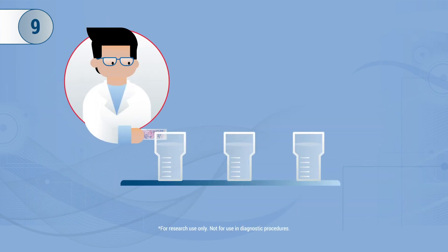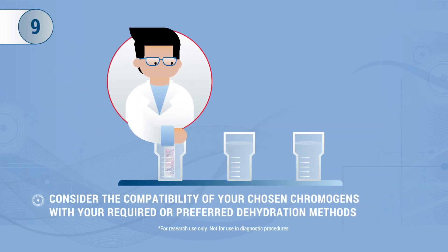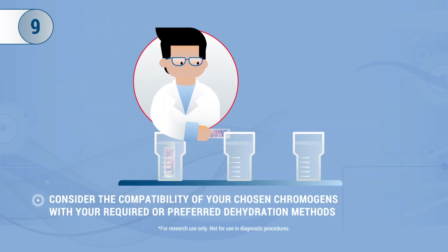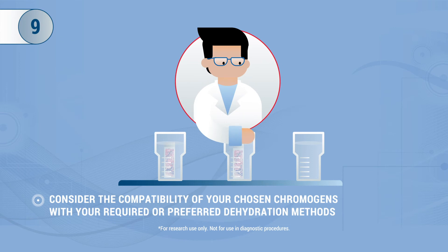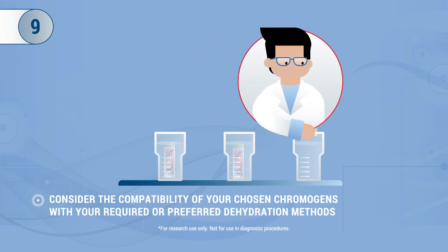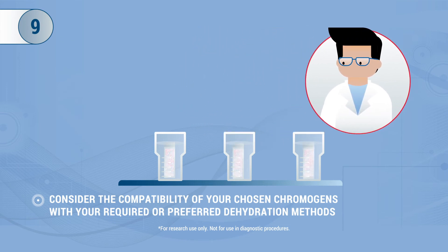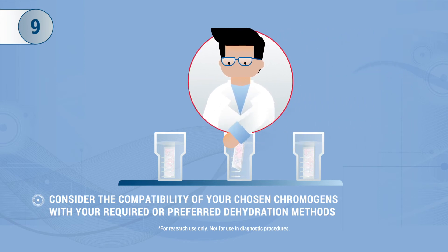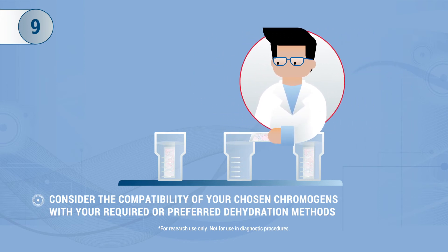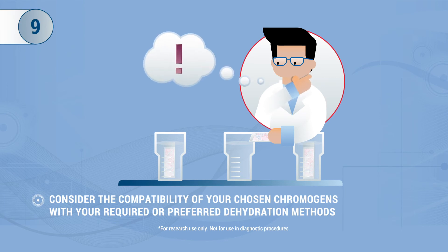Tip 9: Another factor to consider when choosing your chromogens is compatibility with your required or preferred dehydration methods. Since some chromogens are not compatible with alcohol and xylene and may result in loss of signal, in those instances you may need to air dry or aqueous mount your slides.